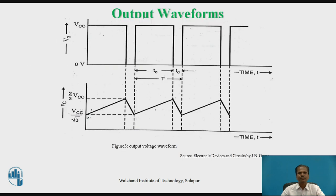Figure number 3 shows the output voltage waveform of the ramp generator signal. The output voltage switches between two voltage levels: plus VCC and 0 volt. During time duration Tc, when the capacitor charges from one-third VCC to two-third VCC, the output remains high. During the discharging interval from two-third VCC to one-third VCC, the output remains low. The discharging time Td is negligibly small, so at the output we get a continuous ramp signal.